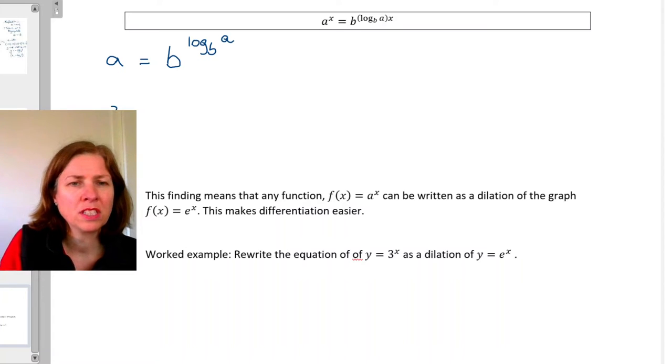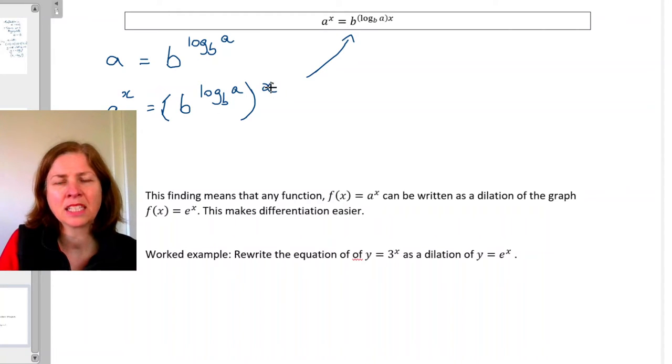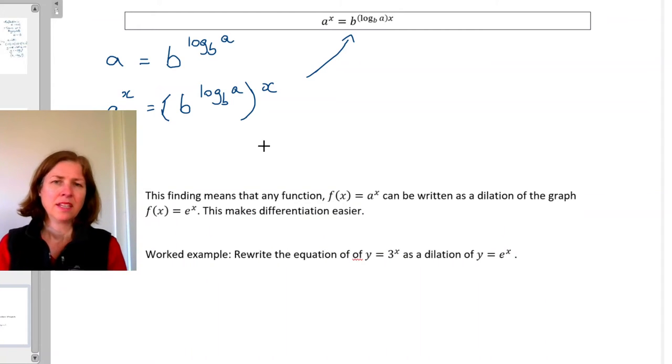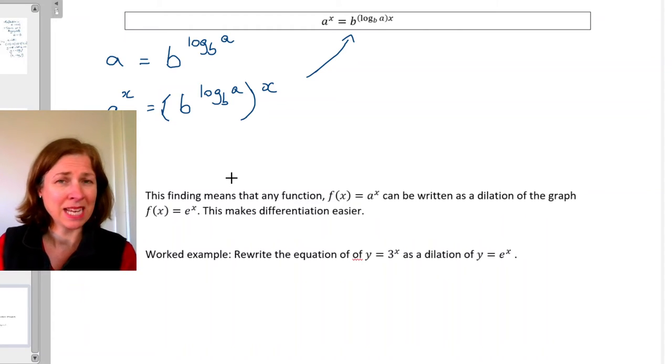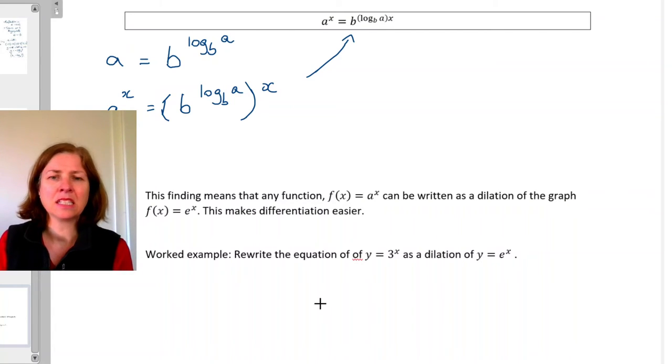If I now raise both sides of this equation to the power of x, then you can see that this leads me to this expression up here. If I expand this, that x will be multiplied by the power there, and I'll have a to the power of x equals b to the power of log base b of a times x. Now if I consider a and b as parameters, that means constants in a function, and if I consider x to be a variable, then what I'm doing there is I'm rewriting a to the power of x as b to the power of some k times x.